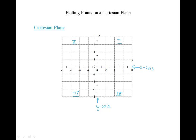In Quadrant one, the x-coordinates and the y-coordinates are positive. In Quadrant two, the x-coordinates are negative and the y-coordinates are positive. In Quadrant three, the x-coordinates are negative and the y-coordinates are negative. And in Quadrant four, the x-coordinates are positive and the y-coordinates are negative.